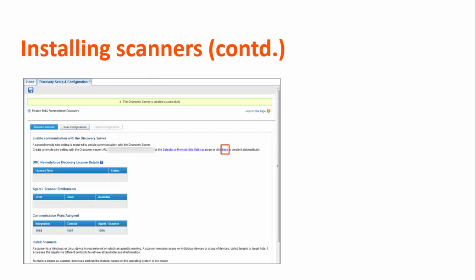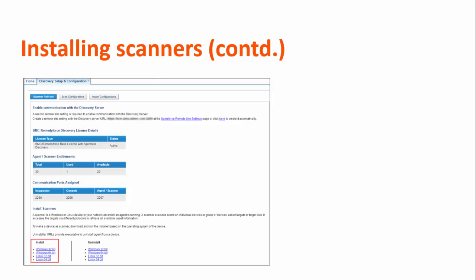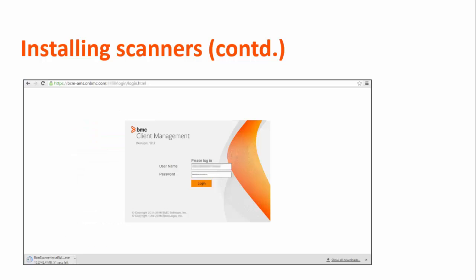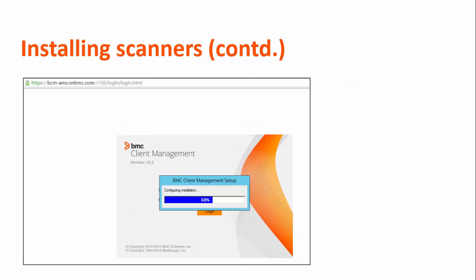After requesting the discovery server, the page shows the details to install a scanner. To enable communication between BMC RemedyForce and the RemedyForce Discovery server, you need to create a remote site. Click the highlighted link to create a remote site automatically. From the Discovery Setup and Configuration page, copy the installer link. On the scanner device, paste the installer download URL. On the login page, enter the user ID, which is your Salesforce organization ID, and password, which you had set up before requesting the RemedyForce Discovery server.